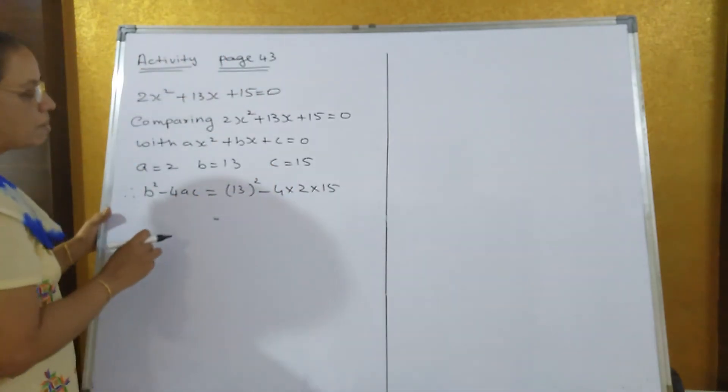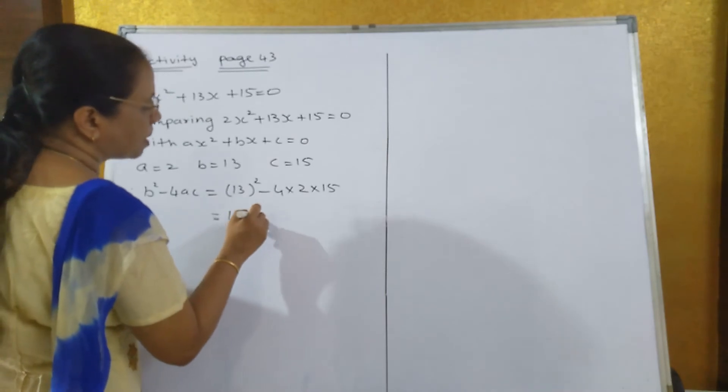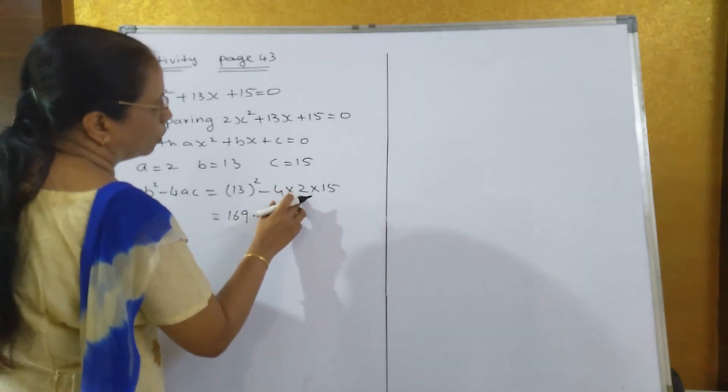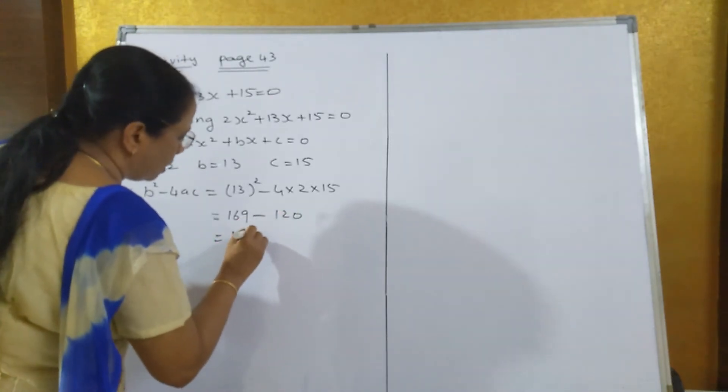Put this value in b² - 4ac. 13² = 169 minus 4 into 2 into 15 is 120, that's equal to 49.